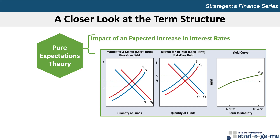On the borrower side, borrowers who also expect interest rates to increase will prefer to lock in the present interest rate over a long period of time, preferring to issue long-term securities rather than short-term securities. This shifts the demand curve for short-term investor funds to the left from D1 to D2, putting downward pressure on short-term yields resulting in a new equilibrium rate I2 lower than I1. The upward pressure on long-term yields causes equilibrium to increase from I1 to I2. Ultimately, the yield curve shifts from a flat line YC1 to an upward-sloping curve where short-term yields are lower and long-term yields are higher.